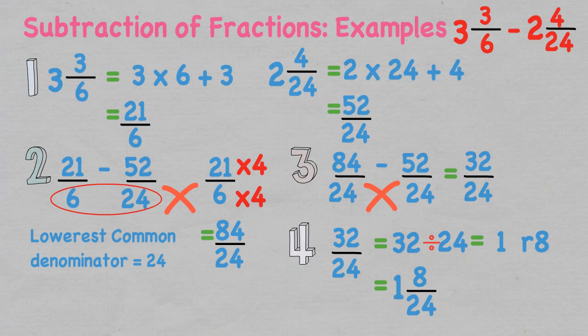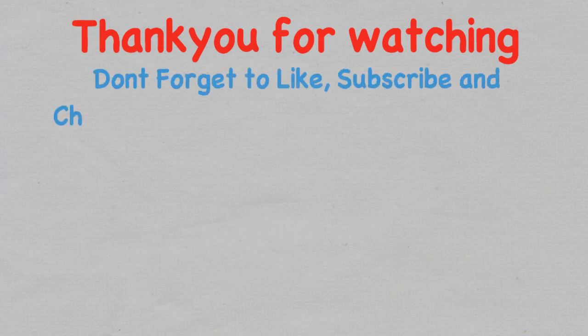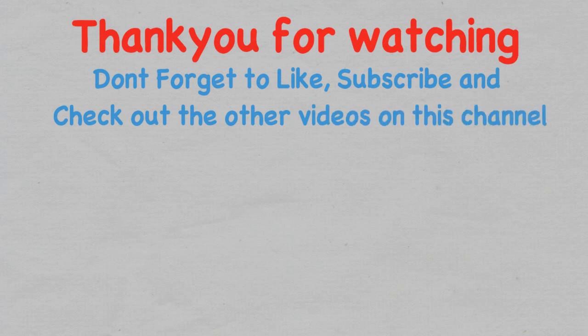We can simplify this improper fraction into a mixed fraction by dividing the numerator by the denominator: that is one with eight left over. So our final answer is one and eight over 24. I hope this video helped further increase your understanding of fractions and how to add and subtract them. If you have any questions, put a comment in the comment section. Thank you for watching — don't forget to subscribe, hit the like button, and have an awesome day!